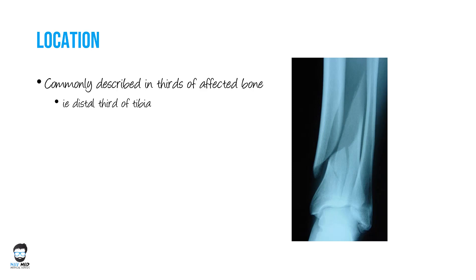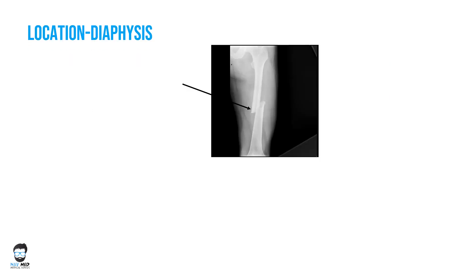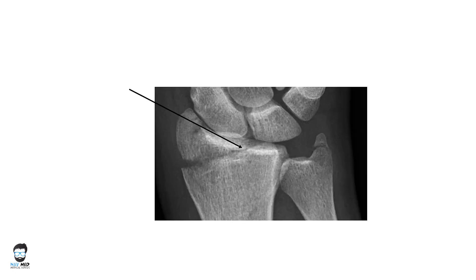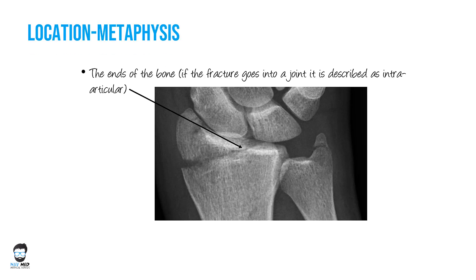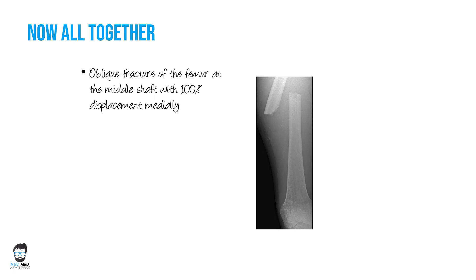Location is commonly described in thirds of the affected bone — for example, distal third of the tibia. Other examples include proximal or middle third of the femur. If the fracture is at two levels, it is called a segmental fracture. Location can also be described as diaphysis (shaft), metaphysis (toward the end of the bone), or intra-articular, as when a fracture extends into a joint such as the wrist. For example, a complete description would be: 'Oblique fracture of the femur at the middle shaft with 100% displacement medially.'